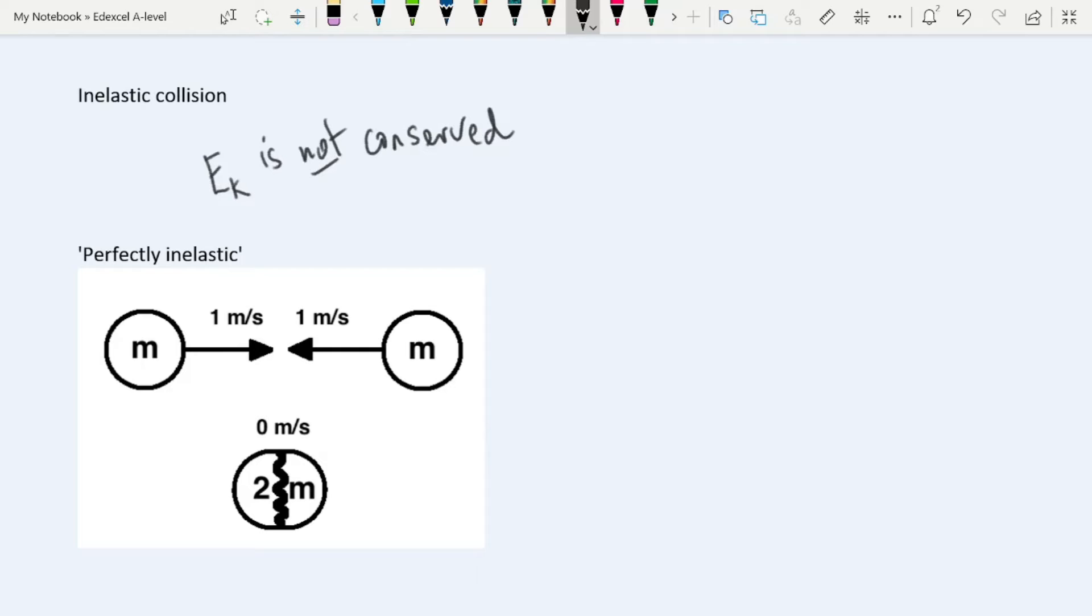There is, again, a specific type of inelastic collision that's called perfectly inelastic. And this would be where the two objects stick together and don't move after the collision. But again, this is a specific type of inelastic collision. Most inelastic collisions are not like this.